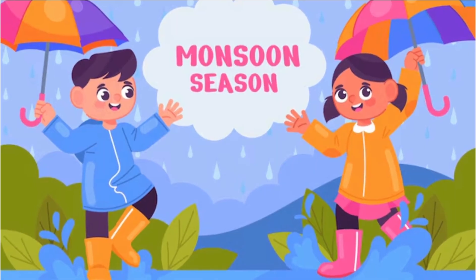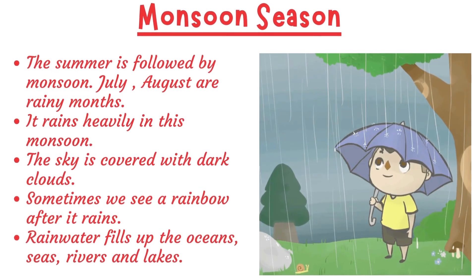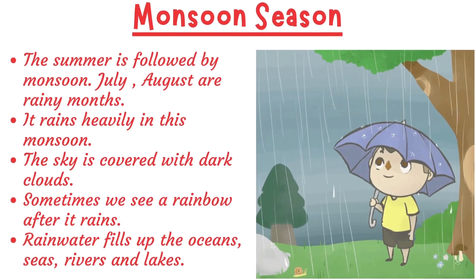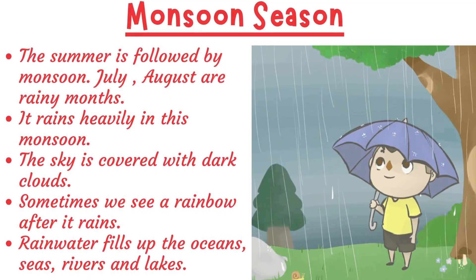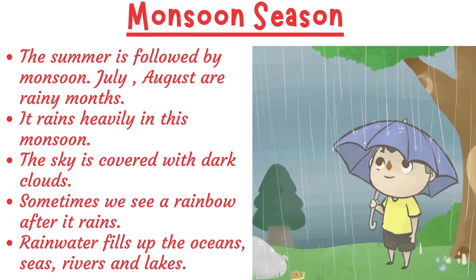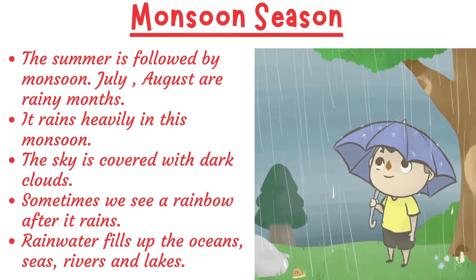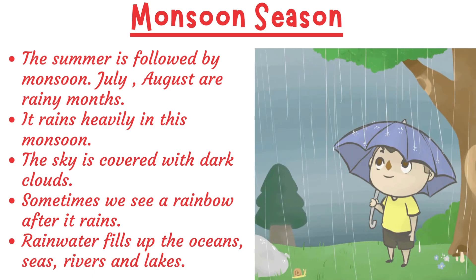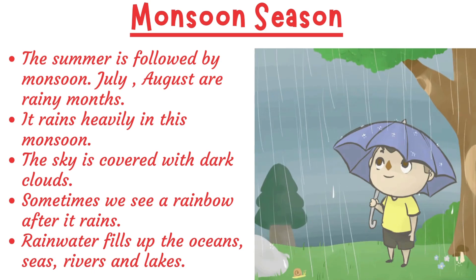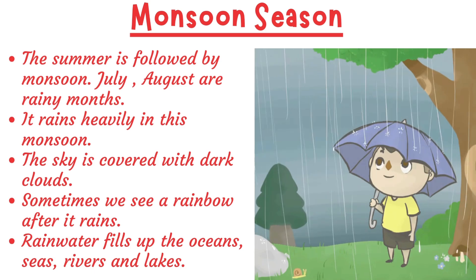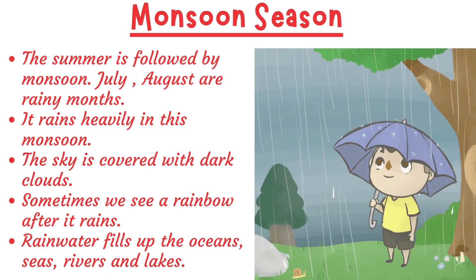Monsoon Season: The summer is followed by monsoon. July and August are rainy months. It rains heavily in the monsoon. The sky is covered with dark clouds. Sometimes we see a rainbow after it rains. Rainwater fills up the oceans, seas, rivers and lakes.